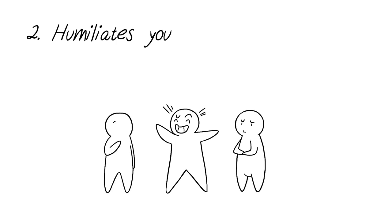2. Humiliates You. This behavior is often done in front of other people, perhaps his or her friends, and is used as a way to keep their victim down. The abuser's goal is to make them feel weak and small so that the victim doesn't stand up for themselves.